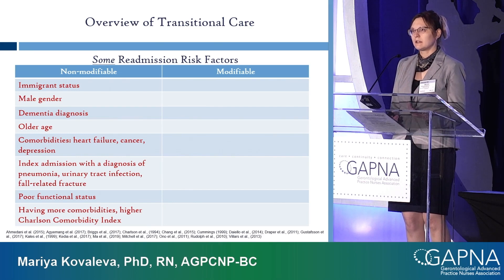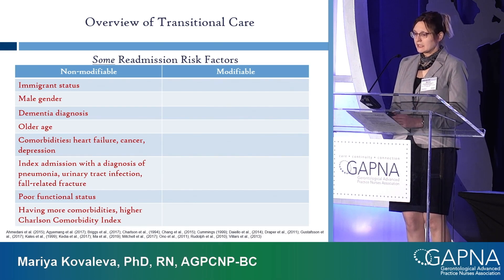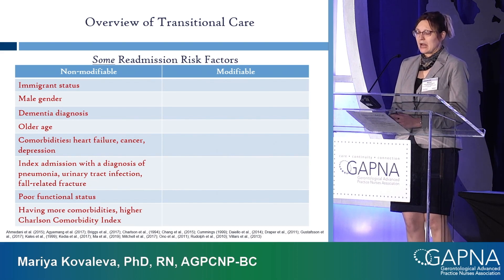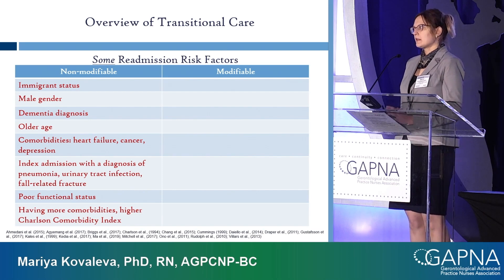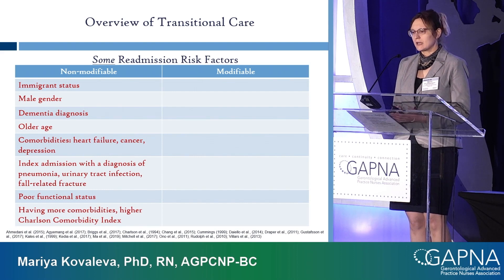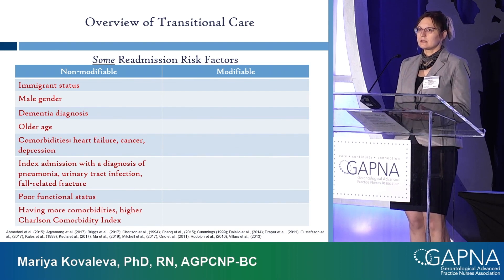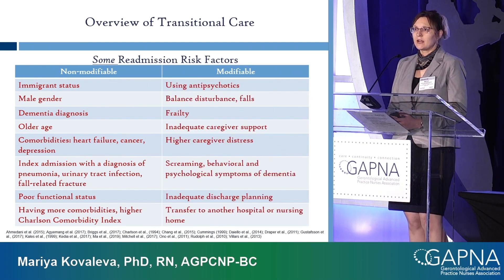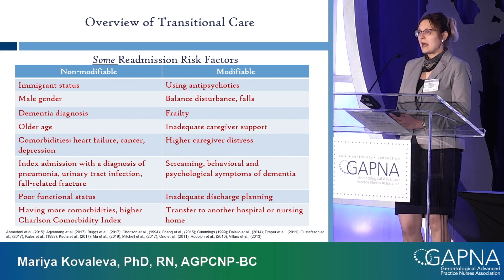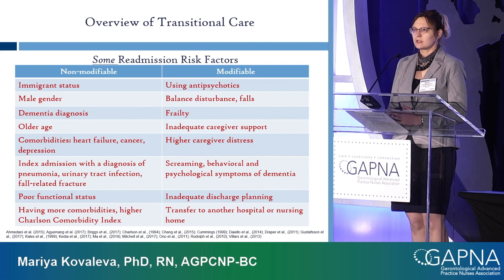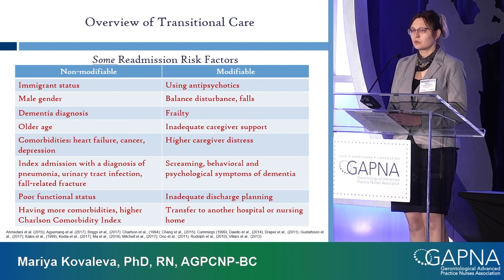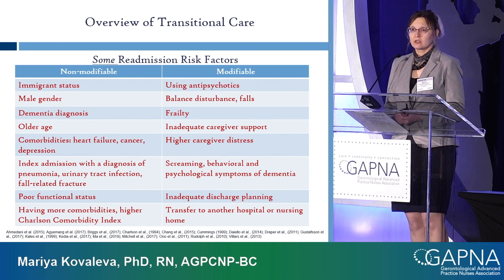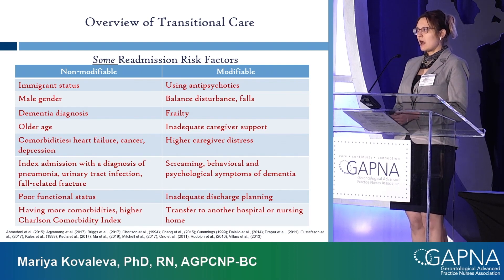Poor functional status can be partially managed with nutrition and exercise. Just having more illnesses overall — being sicker — also contributes. Modifiable factors include use of antipsychotics, balance disturbance and falls, and frailty, which we can manage to an extent. Things we can and should manage include inadequate caregiver support, high caregiver stress, dementia symptoms like screaming and agitated behavior, poor discharge planning, and transfer to another hospital or nursing home.